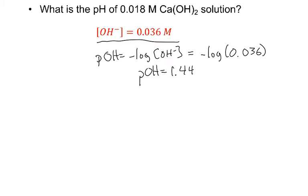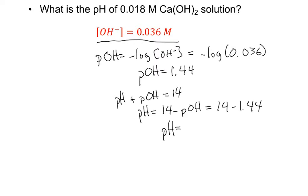I have the pOH, now I can use that pH plus pOH is equal to 14. So the pH is going to be 14 minus pOH, or 14 minus 1.44. So my pH is going to be 12.56.